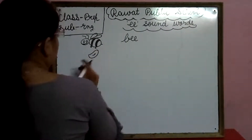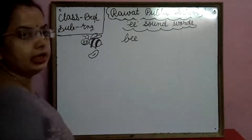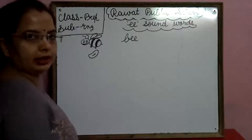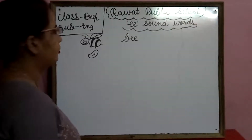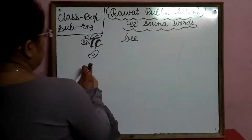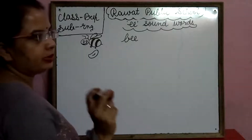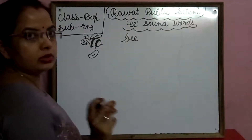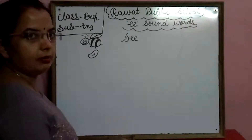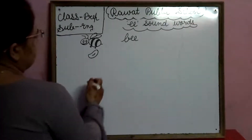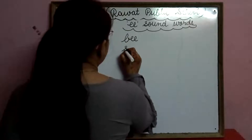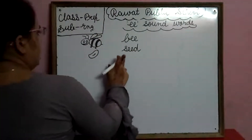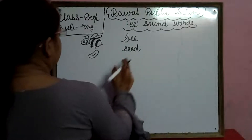This is a picture of a seed. Seed means beege. If we grow a plant, we grow a seed. Seed: S-double-E-D.